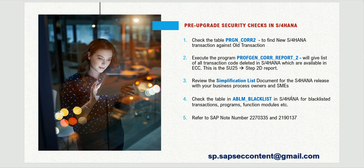The fourth tool is the ABLM_BLACKLIST table. You can take the transaction codes from your downloaded AGR_T_CODES, put them in the selection screen of this table, and get a list of transaction codes that have been blacklisted — meaning you cannot use those transaction codes anymore. Download the data from these four steps and provide it to your business process owners and subject matter experts for brainstorming sessions to decide how to handle these changes.